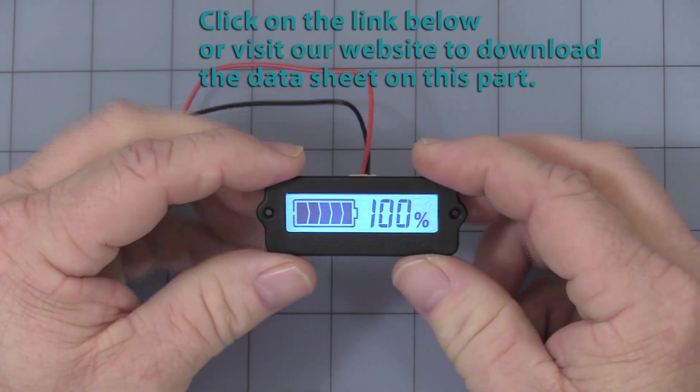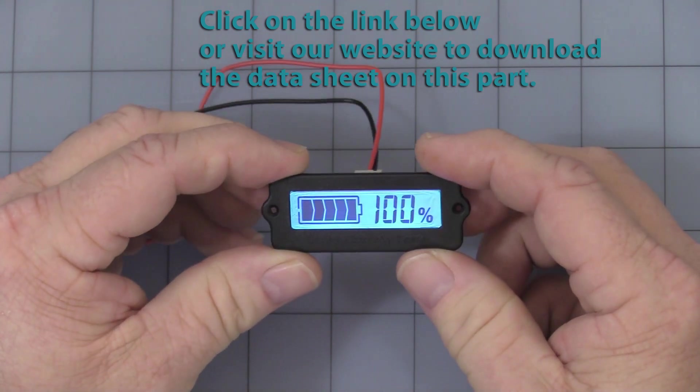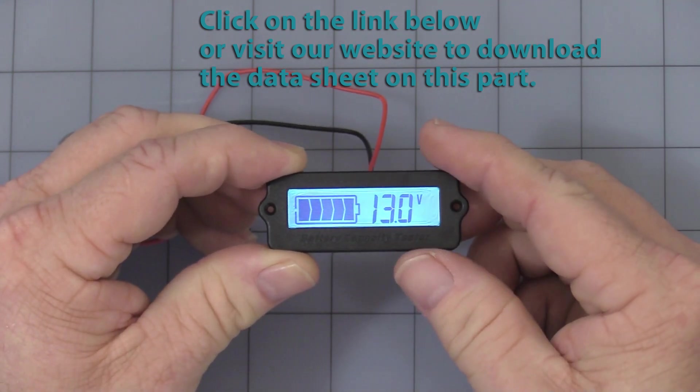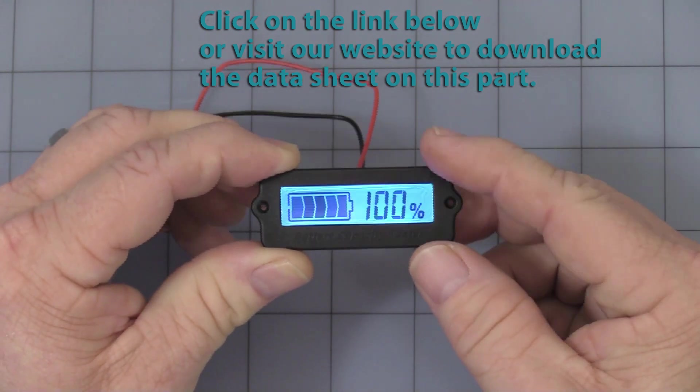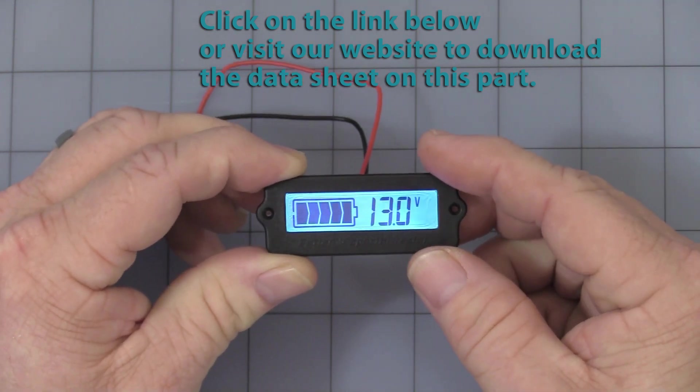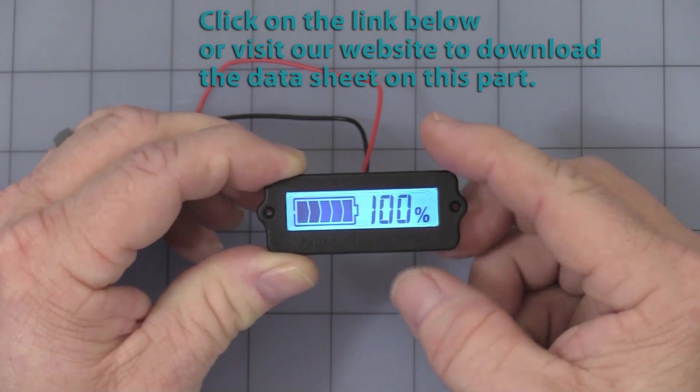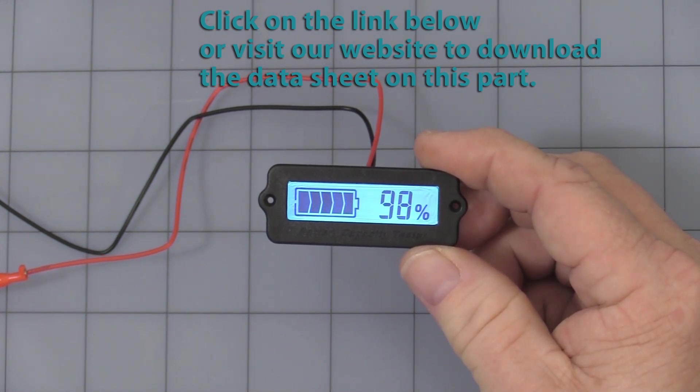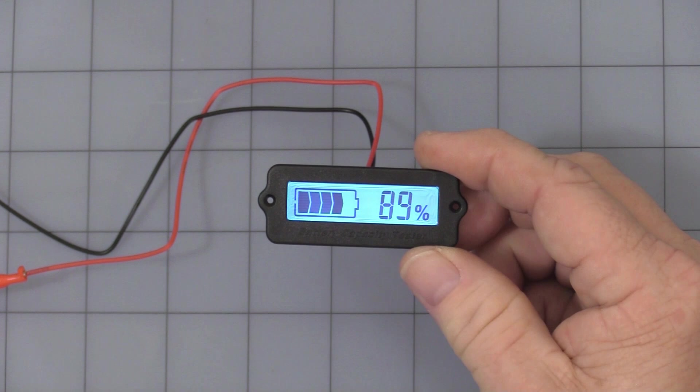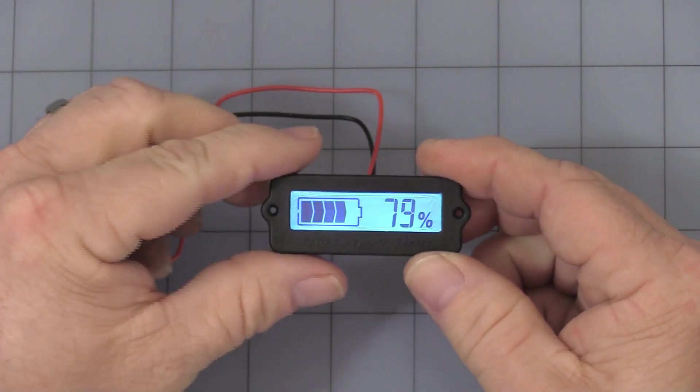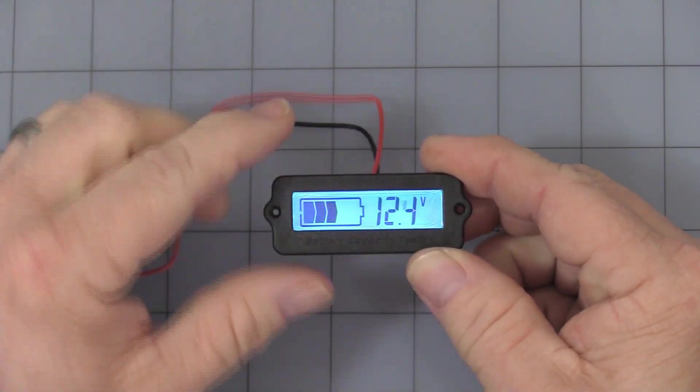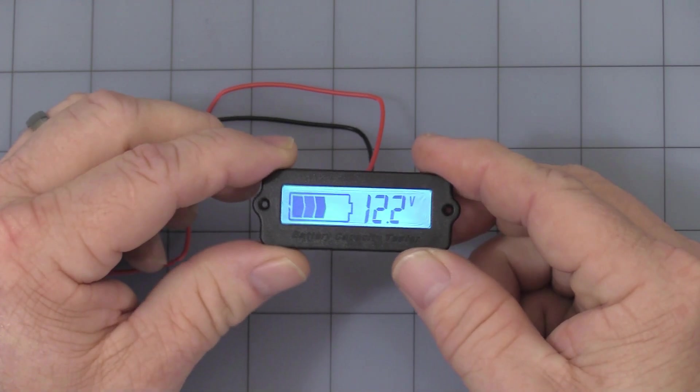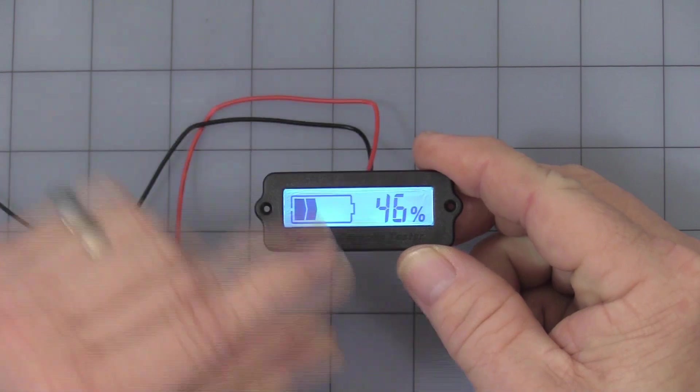Let's go ahead and start. It comes factory set for a 12 volt DC lead acid battery. And at 13 volts, that's pretty much 100%. I'm pressing the button on the back to switch between voltage and percent. I have this hooked up to a bench top power supply. I'll go ahead and turn it down to about 12 volts. You see it has a very slow response rate because it's designed to work with the drain on a battery, which is a very slow, steady drain.